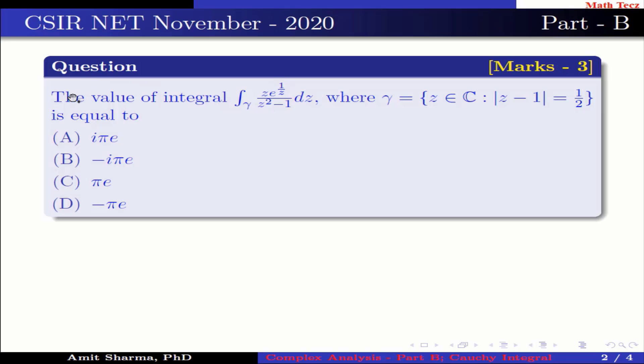Question is the value of integral, integration over gamma z e raised to the power 1 by z divided by z square minus 1 dz, where gamma is z belongs to C such that mod of z minus 1 equal to 1 by 2, is equal to option A: iota pi e, option B: minus iota pi e, option C: pi e, option D: minus pi e.